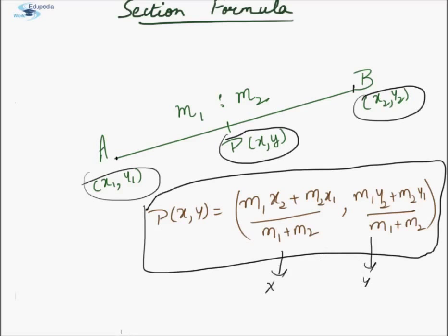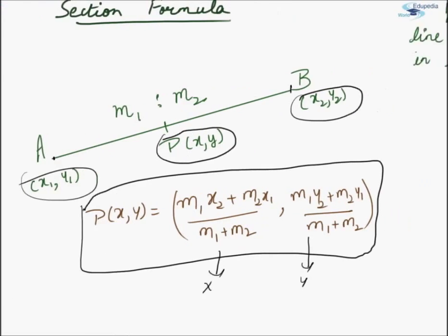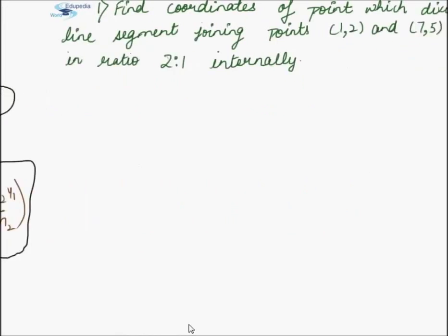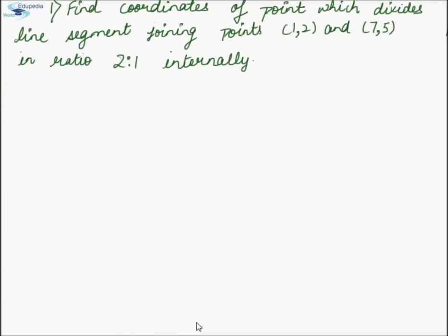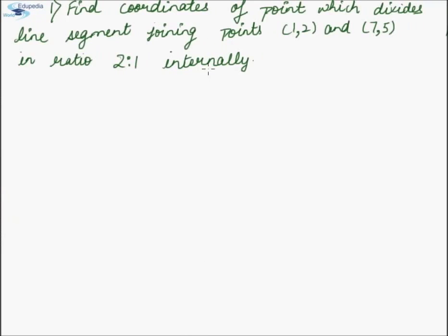Now let us discuss some questions on this formula. In the first question, we are asked to find the coordinates of a point which divides the line segment joining two given points in ratio 2:1 internally.